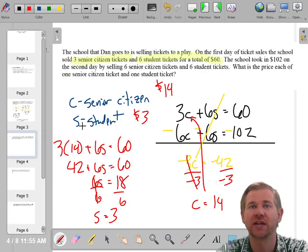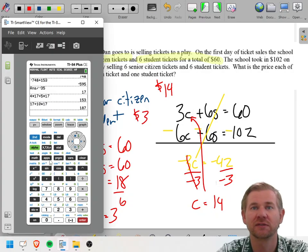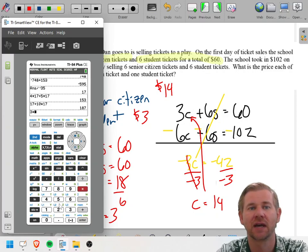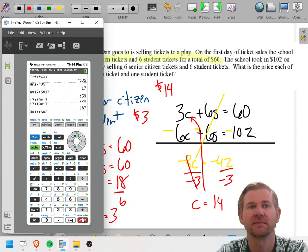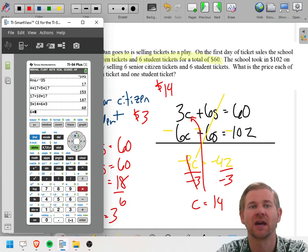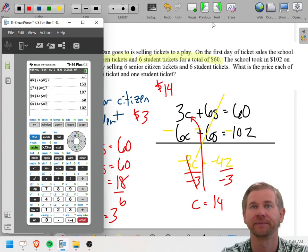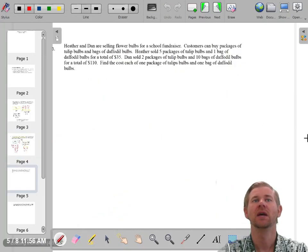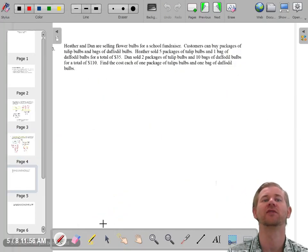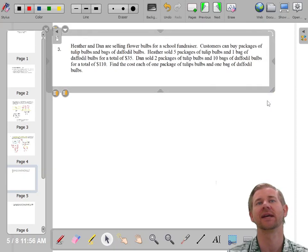And again, these are very easy to check. Just plug them into the two equations. Make sure you got them right. Three times 14 plus six times three should give you 60. Yes. Six times 14 plus six times three should give you 102. I know I did it right. Great. I'll do one more with you. I'll leave the other two for practice. Let's do one more just like that.